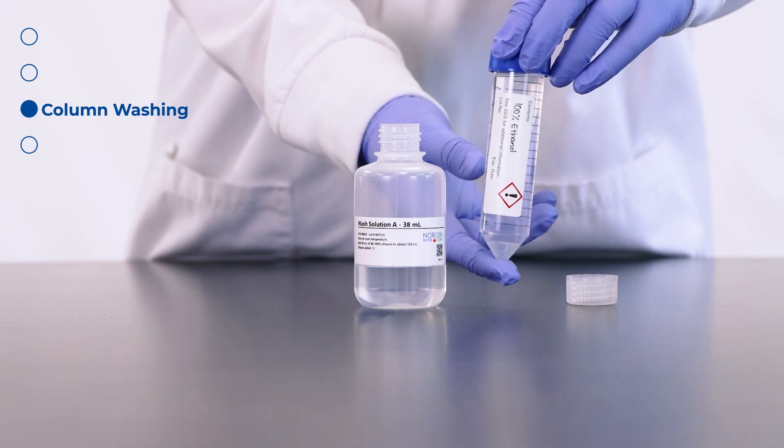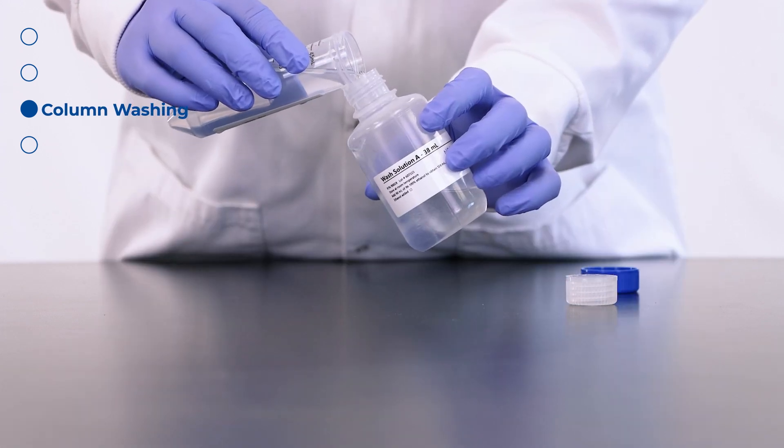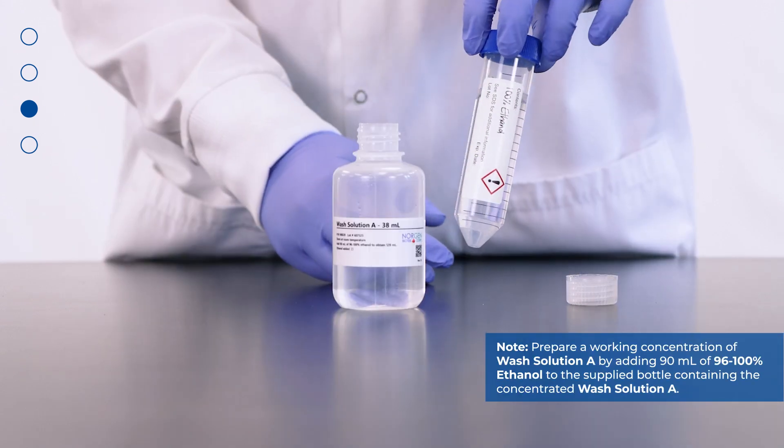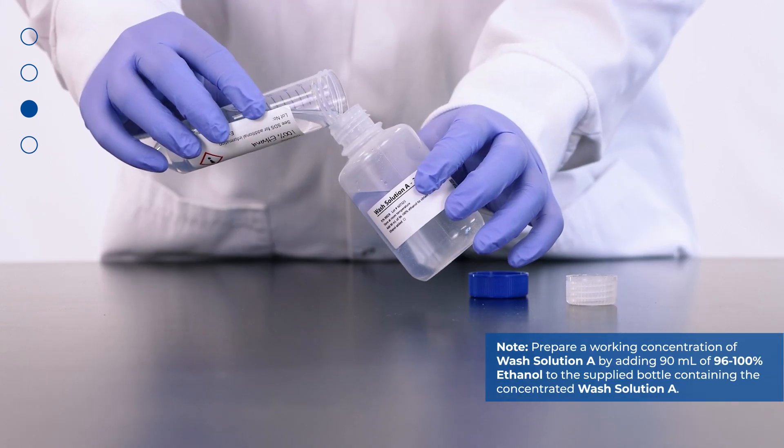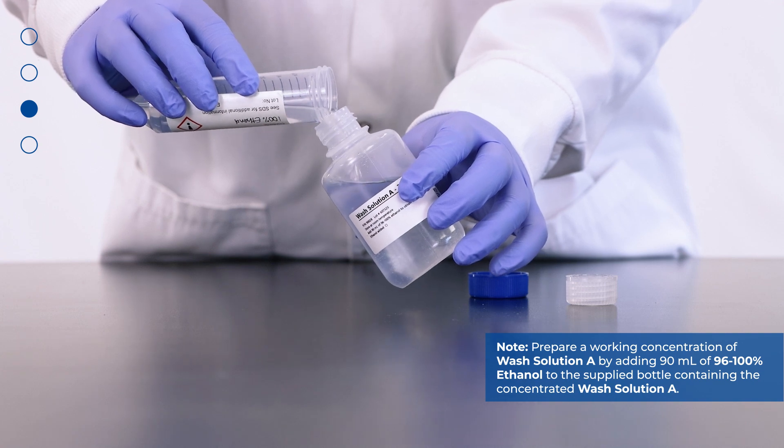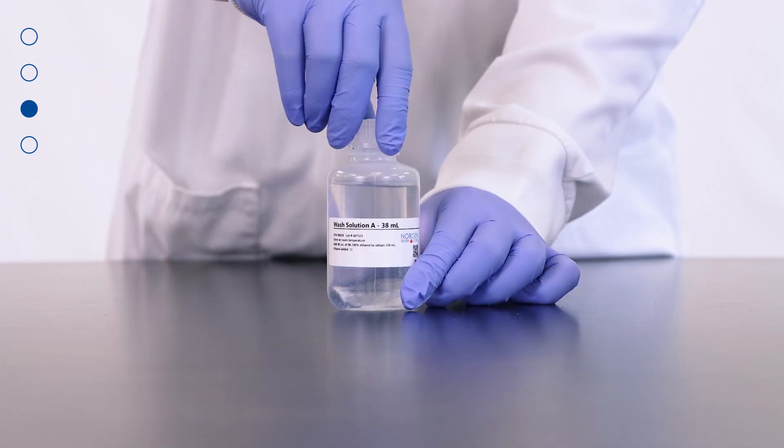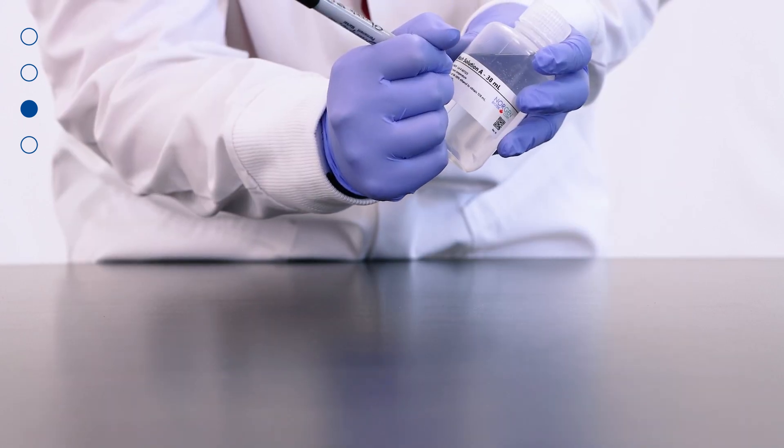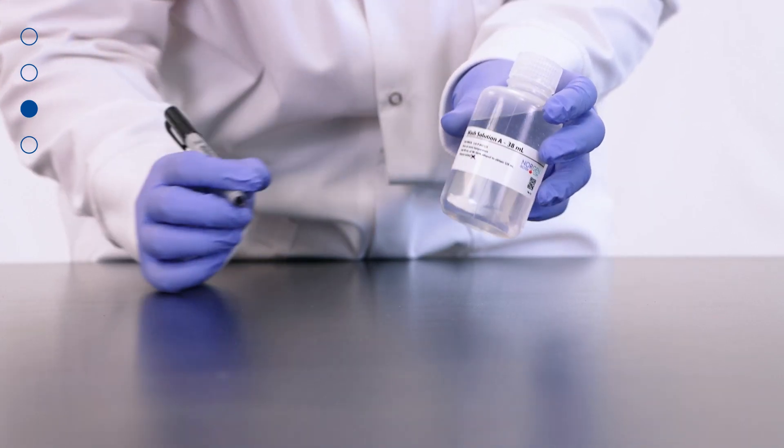Now, wash the column of all unwanted nucleic acids. Before you begin the wash steps, add 90 milliliters of 100% ethanol to the supplied bottle containing the wash solution A. This will give a final volume of 128 milliliters. The label on the bottle has a box that may be checked to indicate that the ethanol has been added.